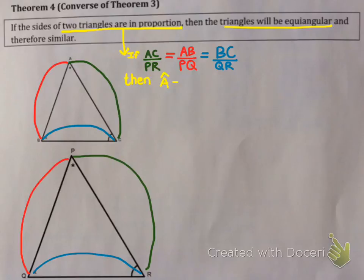So then, angle A must be equal to angle P. Now I've actually labelled that in already, so those must be equal. Angle B must be equal to angle Q, which I've labelled in already. And angle C must be equal to angle R. So they must be equiangular.